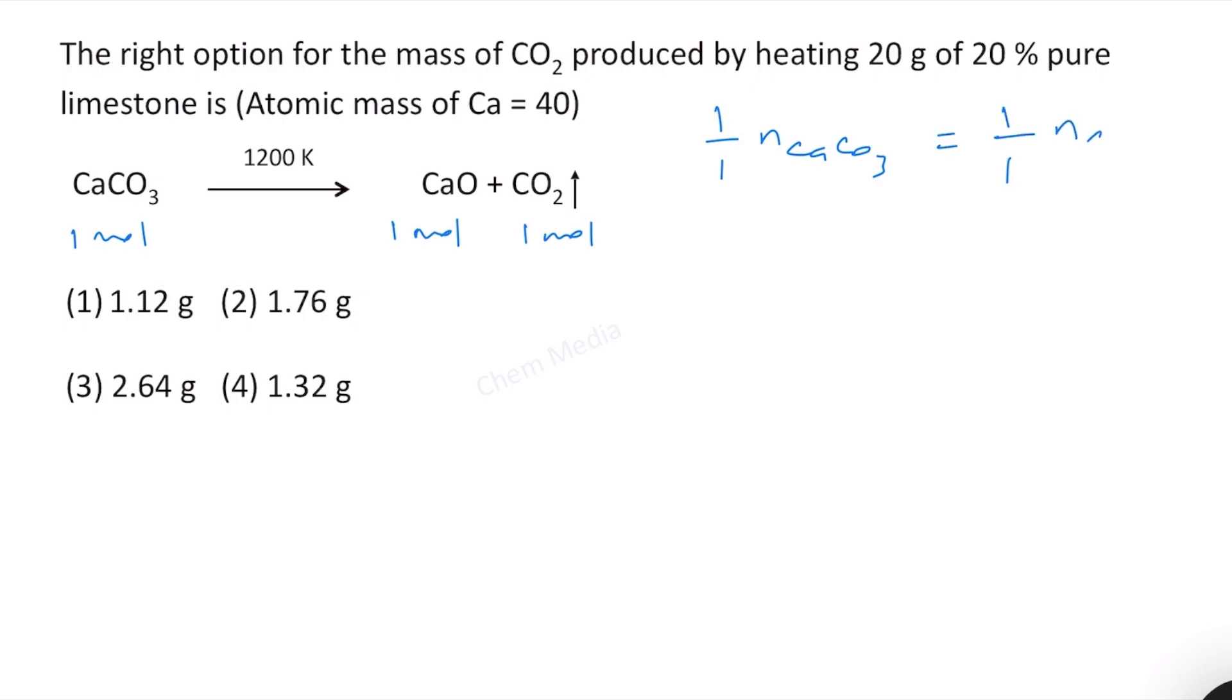Equal to the number of moles of CO₂. Whatever is the stoichiometric coefficient that we write in the denominator, so the number of moles of calcium carbonate is equal to number of moles of CO₂. Here the amount of sample that we have is 20 grams.